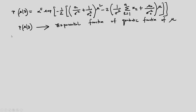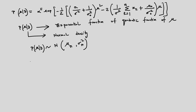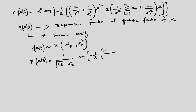Observing carefully, p(mu|D) is an exponential function of a quadratic function of mu — which means p(mu|D) is itself a normal density. So we can write p(mu|D) as a Gaussian with mean mu_n and variance sigma_n^2: p(mu|D) = (1/sqrt(2*pi*sigma_n)) exp(-1/2 * ((mu - mu_n)/sigma_n)^2).